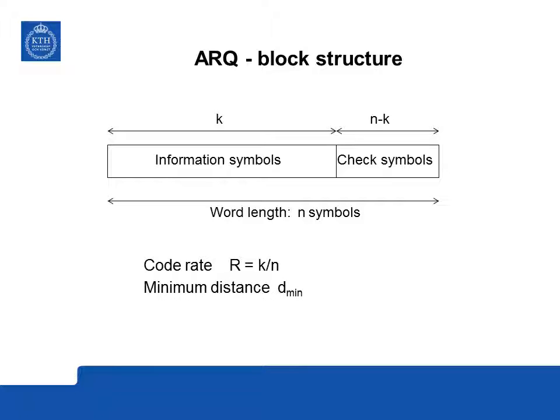The other performance measure is the error-detecting capability of the code, characterized by the minimum distance. If we have two different messages, the minimum distance is the smallest number of symbols by which those messages differ. We will describe how this is used to detect errors with the following example.